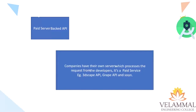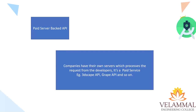There are also paid server-backed APIs. These are companies which develop APIs and provide them as a service based on requests from developers — basically a paid service where the input from the user's application goes directly to the API server, the API server processes the input, and gives the output back to the application. A common example is 3dscape, which is an API used to render live 3D models from images that you take. These kinds of APIs are subscription-based, so you have to pay money in order to get your application working or to host your application.